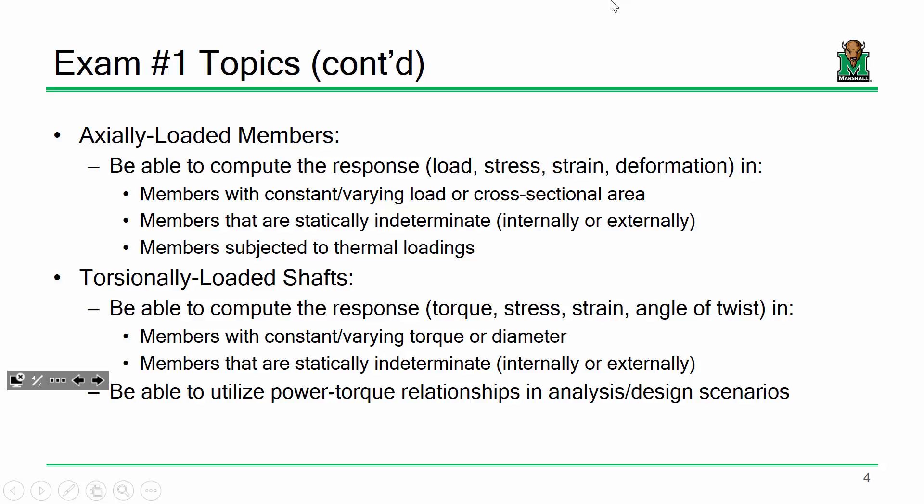Members subjected to thermal loads — if they're heated up or cooled down. For torsionally loaded shafts, make sure you can compute the torque, stress, strain, and angle of twist. Members with constant and varying torque or diameter — no non-circular torsional problems, so really just diameter or wall thickness. Members that are statically indeterminate, and make sure you can utilize power-torque relationships.